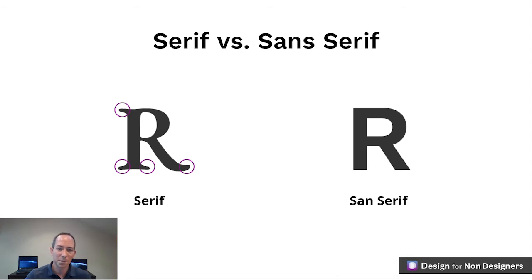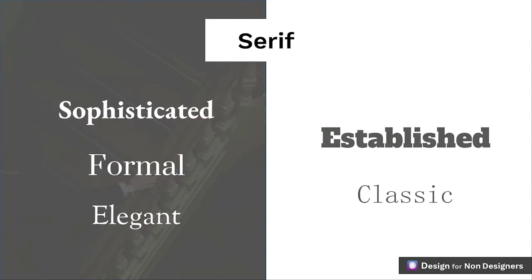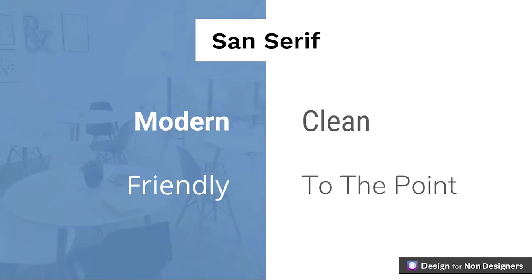The first two are serif versus sans serif. Serif refers to the little feet you see at the bottom or tops of some letters. Fonts that contain them are called serif, and fonts that do not are called sans serif — sans meaning without. Serif fonts can be seen as more formal, elegant, or sophisticated, perhaps established and classic. Sans serif fonts can be seen as more modern, clean, and friendly. You'll notice a lot of new startup companies tend to go with sans serif for this very reason.